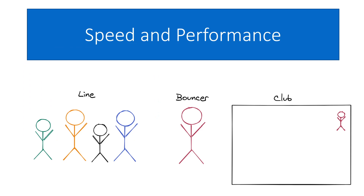Let's take a real-world example to make this more tangible — we'll use a club with a bouncer. The club is essentially our application, the owner inside is like the database, the bouncer has the password to get in, and the people wanting to get in are like clients or users. The smart way — analogous to caching — is that the bouncer has the password in memory and when people give the password he lets them in immediately, which is very fast.